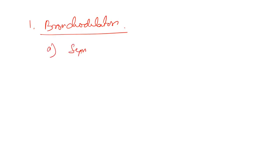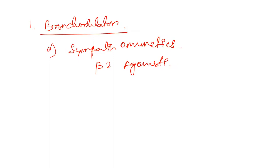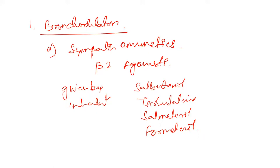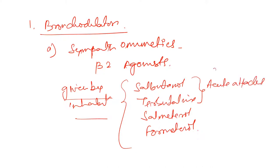Under bronchodilators, the first category is sympathomimetics — specifically beta-2 agonists given by inhalation. These include salbutamol, terbutaline, salmeterol, and formoterol. Salbutamol and terbutaline are used in acute attacks and they are short-acting.